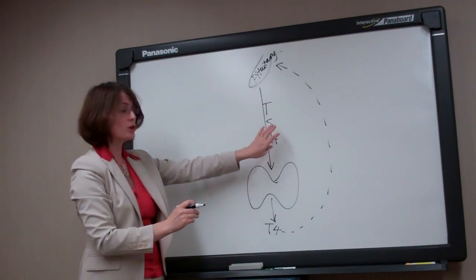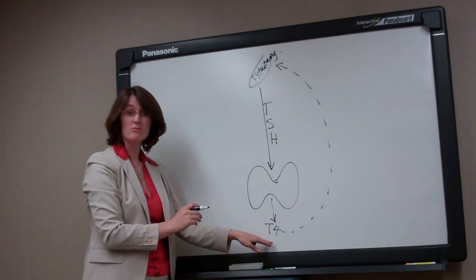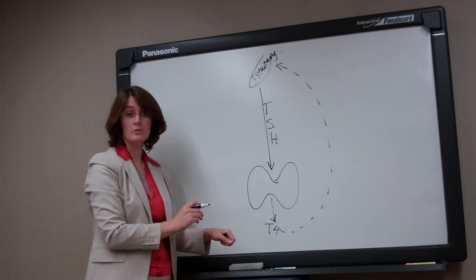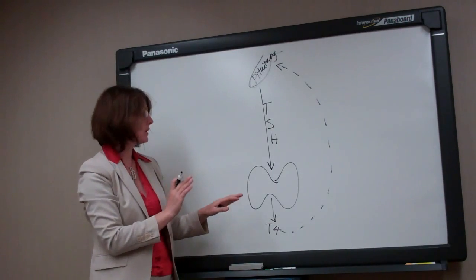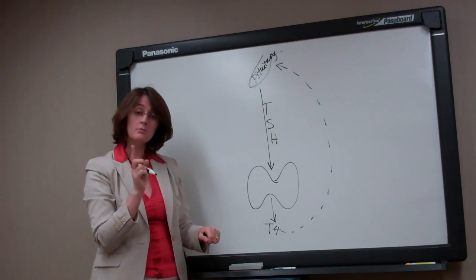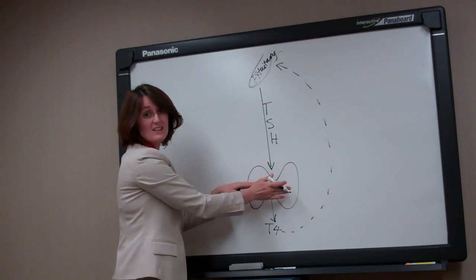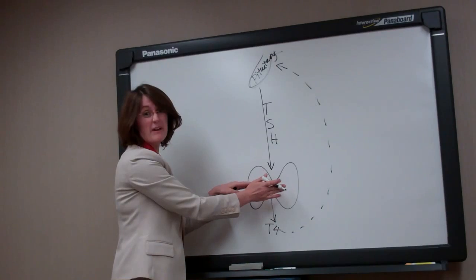So the pituitary gland knows how much stimulation the thyroid gland needs by recognizing how much thyroid hormone there is in the system. In hypothyroidism, it can be caused by two separate events. Either your thyroid gland gets sick, and that's the most common situation by far.